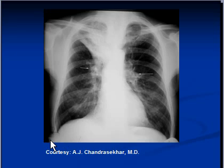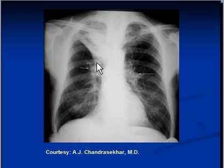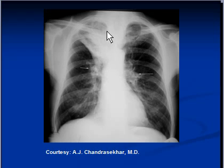Loss of lung volume, triangular opacity in the right upper zone, and upward pull of the hilum are signs of right upper lobe collapse. As the right upper lobe collapses, it decreases in size. Normally the right upper lobe occupies this region, but as it decreases in size it pulls the horizontal fissure, or minor fissure, upward creating a V shape. It also pulls the rest of the lung up.